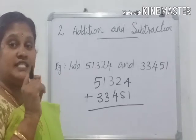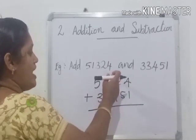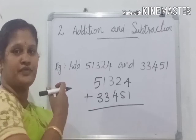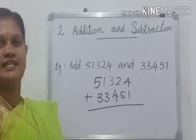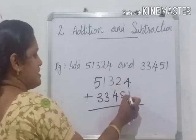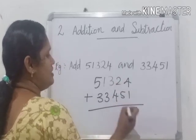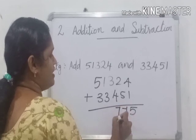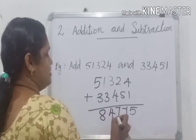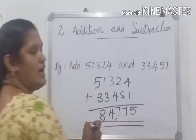Add 51,324 plus 33,451, and it will be in such a way that units place under units place, tens place under tens place, hundreds place under hundreds place, and so on. Clear, all of you? Write exactly like this and start addition. We start addition from units place. 4 plus 1 equals 5, 2 plus 5 is 7, 3 plus 4 is 7, 1 plus 3 is 4, 5 plus 3 is 8. 84,775 is the answer.